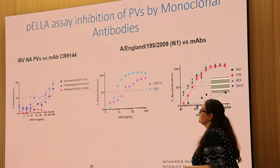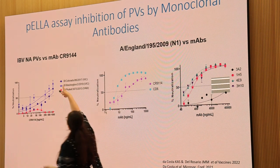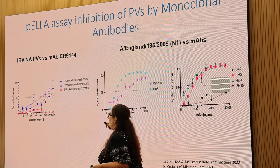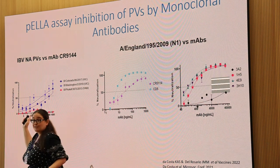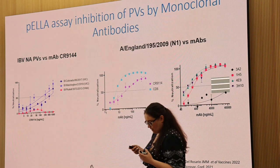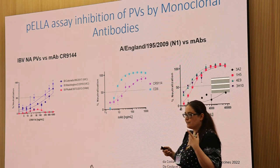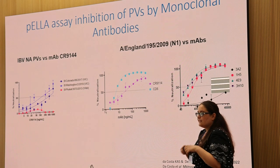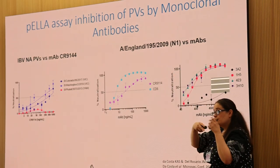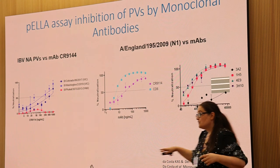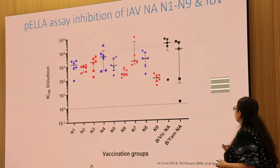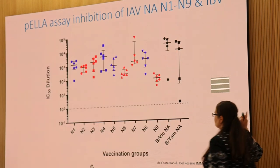We looked at a broadly neutralising antibody, CR9144, which targets the stem of the HA. Why would it produce an inhibiting response when we're looking at neuraminidase activity? It turns out — we can only produce these pseudoviruses with an HA present, and we use H11 because it's the least reactive of all the haemagglutinins. We found that the antibody bound to the stem of the HA and, through steric inhibition, prevented neuraminidase from doing what it's supposed to do.